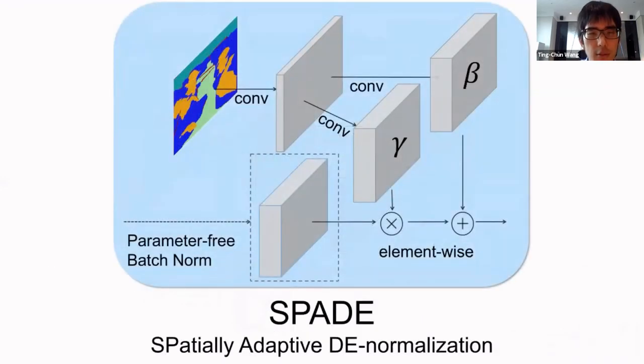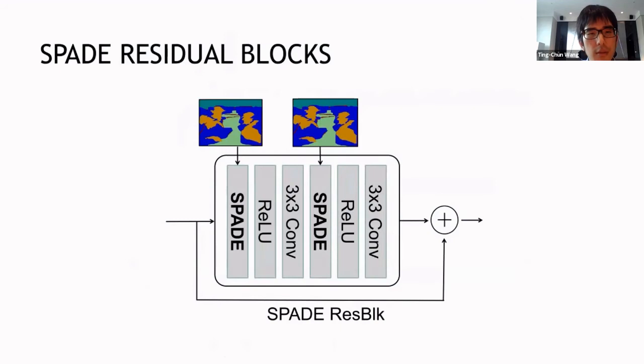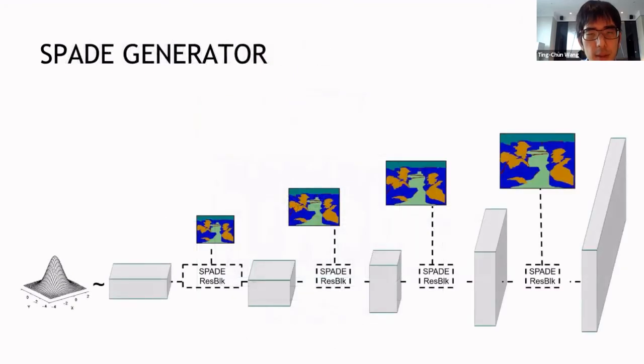So again, this whole module, we call it spatially adaptive denormalization. Because it's spatially varying, and also it's adaptive, it's dependent on the input semantic map that you feed to the network. Given this SPADE normalization, we can replace the original batch norm in a residual block using this SPADE module to form a new SPADE residual block, as shown here. And then by stacking these residual blocks, we can build a new SPADE generator. The inputs can just be some random noise that determines the style of the output. And then after a number of residual blocks, we can reach the final output image.